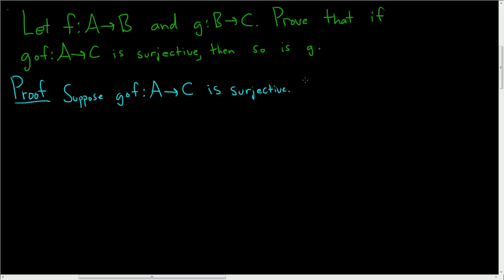The claim is that little g is also surjective. So take any little y in the codomain of little g, which is capital C. We have to somehow produce an element in the domain of g, which is capital B, such that g of our element — which I'll call little b — is equal to y. So we have to find little b.